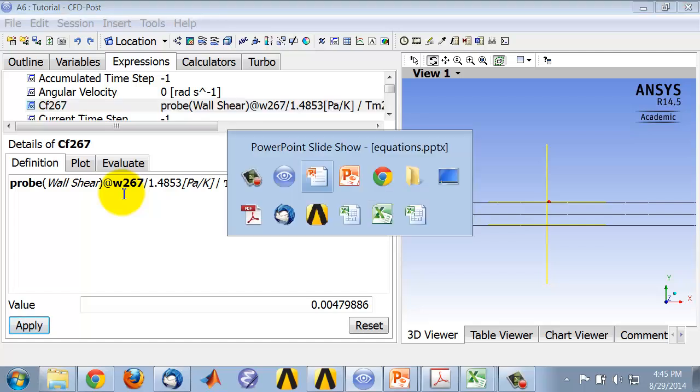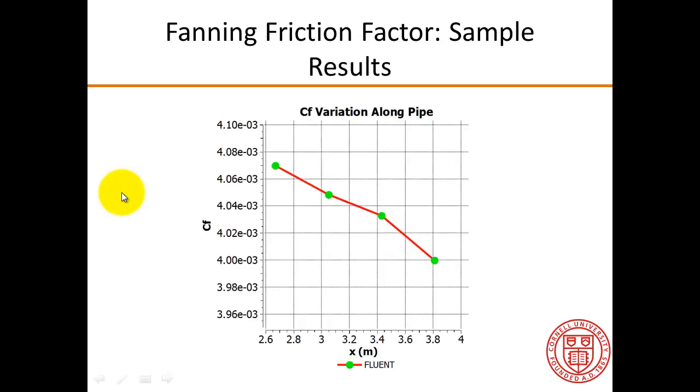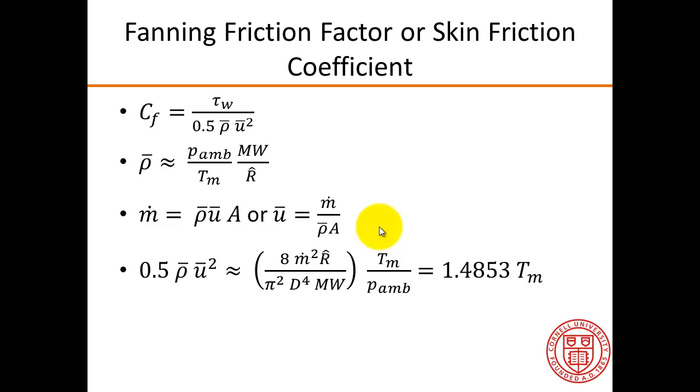When I did that for a different data set, let me show you the result. This is the result I got. If you look at the variation, it's pretty small. This is halfway across the heated section. It's about a 2% variation, and it's actually decreasing slightly as opposed to the wall shear. But to first order, we can assume that the fanning friction factor is almost constant.